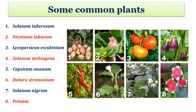These are some well-known common plants belonging to Family Solanaceae. First is Solanum tuberosum — potato. Second is Nicotiana tabacum — tobacco plant. Third is Lycopersicon esculentum — tomato. Fourth is Solanum melongena — egg plant or brinjal. Fifth is Capsicum annuum — chili. Sixth is Datura stramonium, a very common weed. Seventh is Solanum nigrum, a potential medicinal plant. Eighth is Petunia, a well-known ornamental plant.